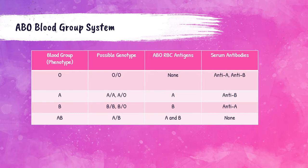For the B blood group, their genotype can either be BB, meaning they inherit a B gene from both parents, or BO, meaning they inherit one B gene from one parent and one O gene from the other. Since the O gene is a silent amorph, it doesn't express in the BO case, so just the B gene does. They have B antigens on their red blood cells and naturally occurring anti-A antibodies in the serum. So if a B blood type person receives blood from an A blood type person, their anti-A antibodies will agglutinate to the A antigens and cause a transfusion reaction.